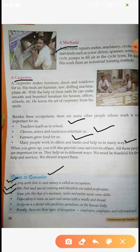Broadly there are three types of occupation: employer, employee, and self-employed. Teen tarah ki occupations hoti hain. Pehla hota hai employer — jo hume job deta hai. Phir uske andar jo kaam karte hain woh hote hain employees. Agar hum kisi ke liye kaam karte hain to hum employee hote hain, aur agar hum kisi ko job de rahe hain to hum employer kehlate hain.